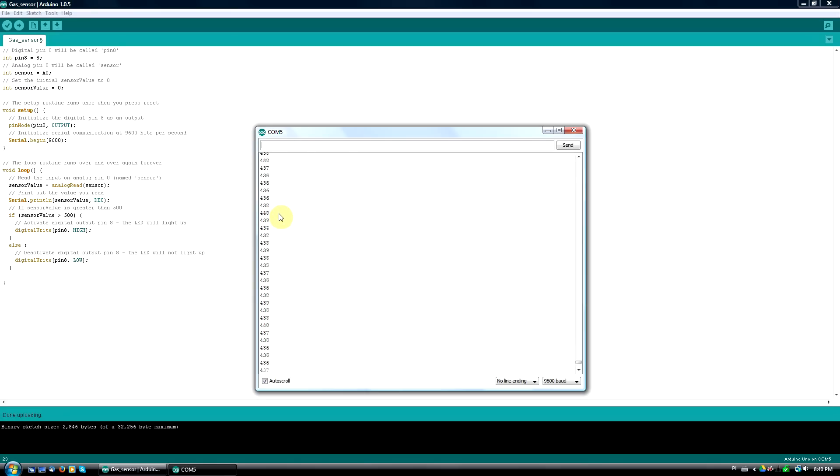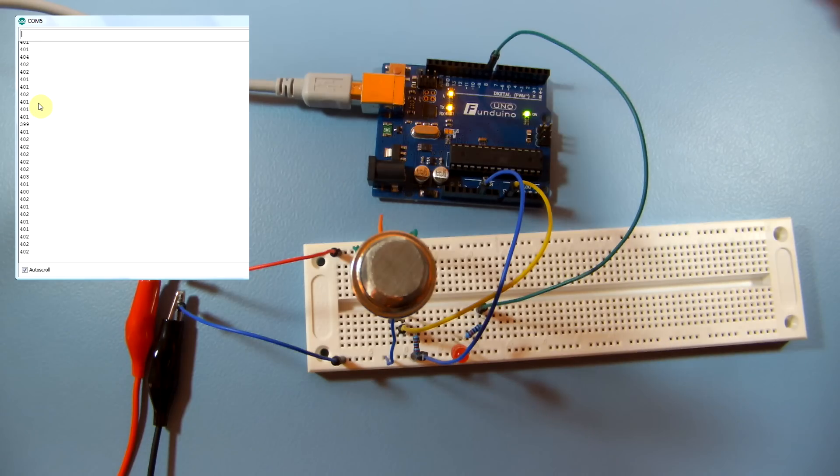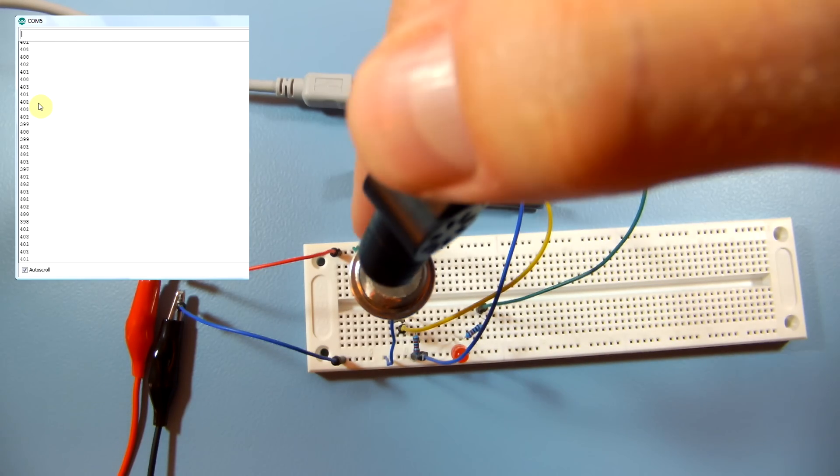Readings from the sensor are reliable after about 2-3 minutes after powering up. After about 3 minutes, you'll notice the readings will go lower and stabilize at a certain base value. Now I'll try to give my sensor some gas from a mini torch.